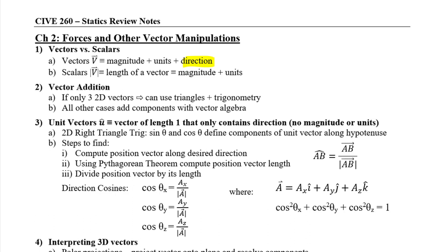As we got into vector addition, there were two different ways to do it. One was to use triangles — three vectors work to make a vector triangle, so we can use trigonometry, law of sines, law of cosines. You can always add components as well. The components are aligned with your coordinate system, which doesn't have to be horizontal-vertical. You can rotate your coordinate system if it helps simplify your components. Coordinate systems are tools — they don't actually change your answers.